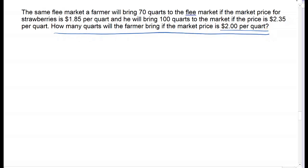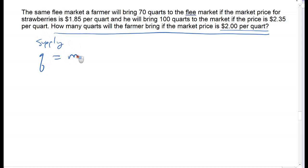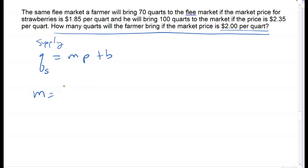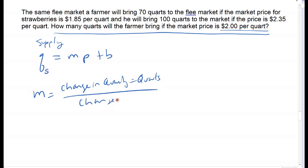It's the same question but from a different point of view. In the demand case, quantity represents items sold. In the supply case, quantity represents items brought to be sold. The setup is actually the same: quantity equals slope times price plus y-intercept. Slope is change in quantity over change in price. The change in quantity is 100 minus 70, which is 30.